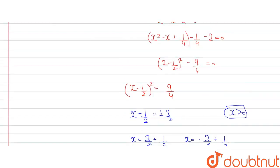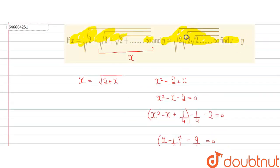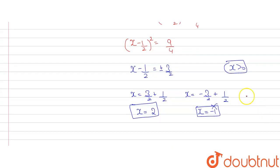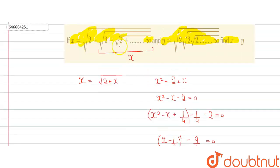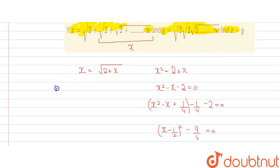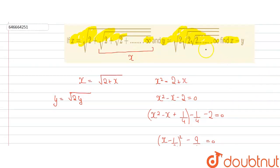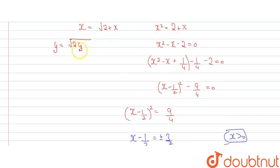Now for the second equation: y is given as √(2·√(2·√(2·...))) up to infinity. Since x > 0 because we are adding all positive terms, the answer must be positive. Similarly for y, just as we substituted x in the first equation, we take the remaining part as y. So we can write y = √(2y).